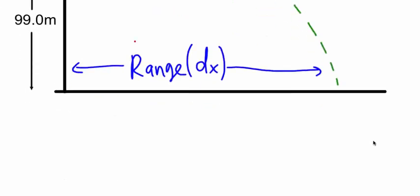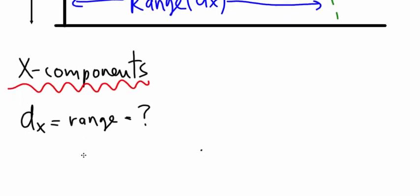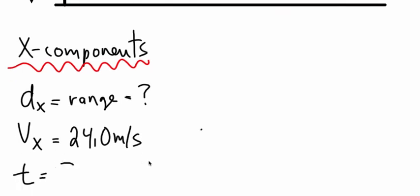So this is a two-dimensional motion question, so we need to look at the X components. The distance in the X is our range, which is a question mark. Our velocity in the X direction is 24 meters per second. And the time of flight is a question mark.